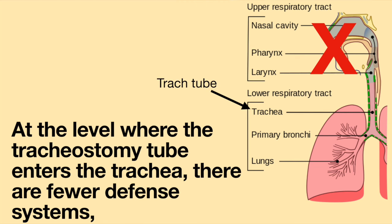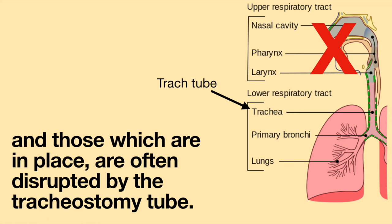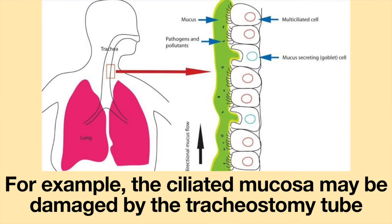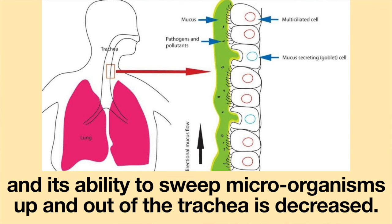At the level where the tracheostomy tube enters the trachea, there are fewer defense systems and those which are in place are often disrupted by the tracheostomy tube. For example, the ciliated mucosa may be damaged by the tracheostomy tube and its ability to sweep microorganisms up and out of the trachea is decreased.